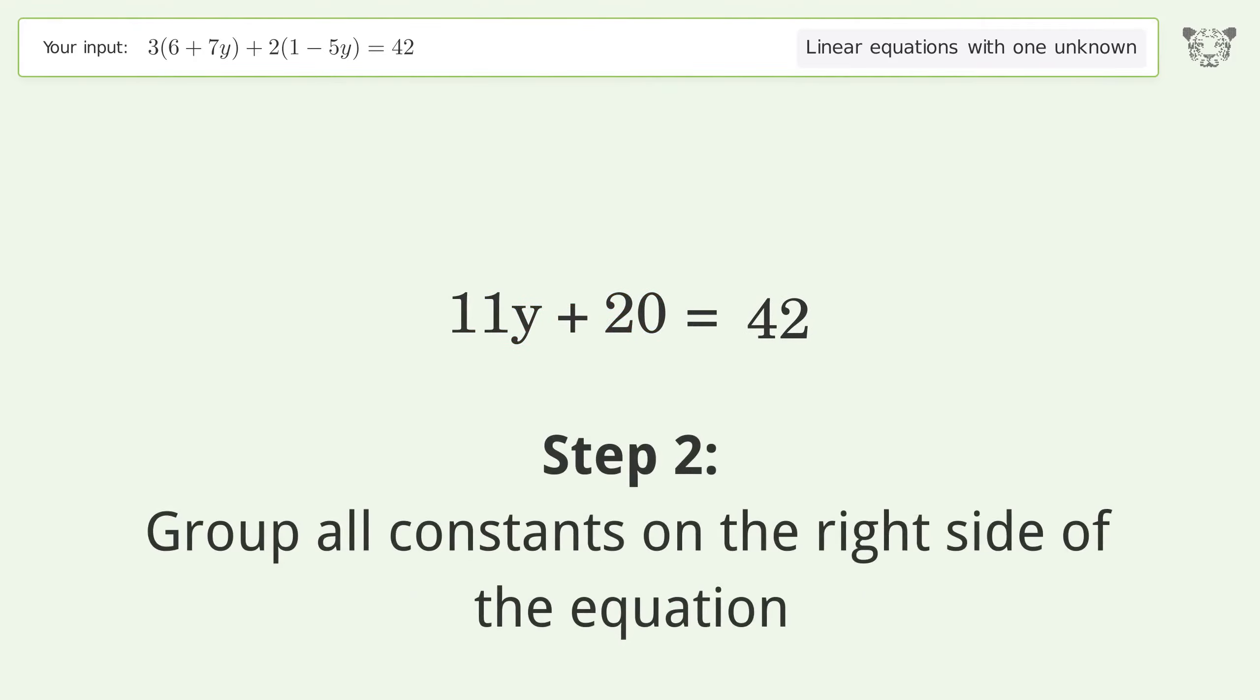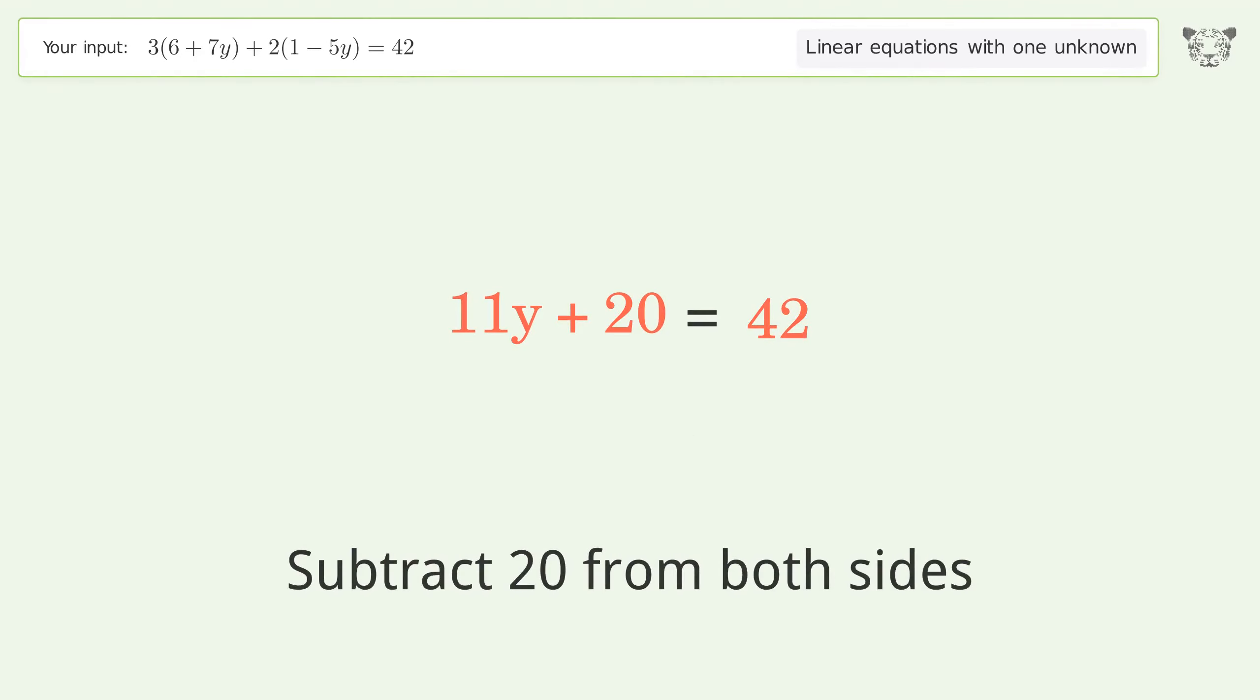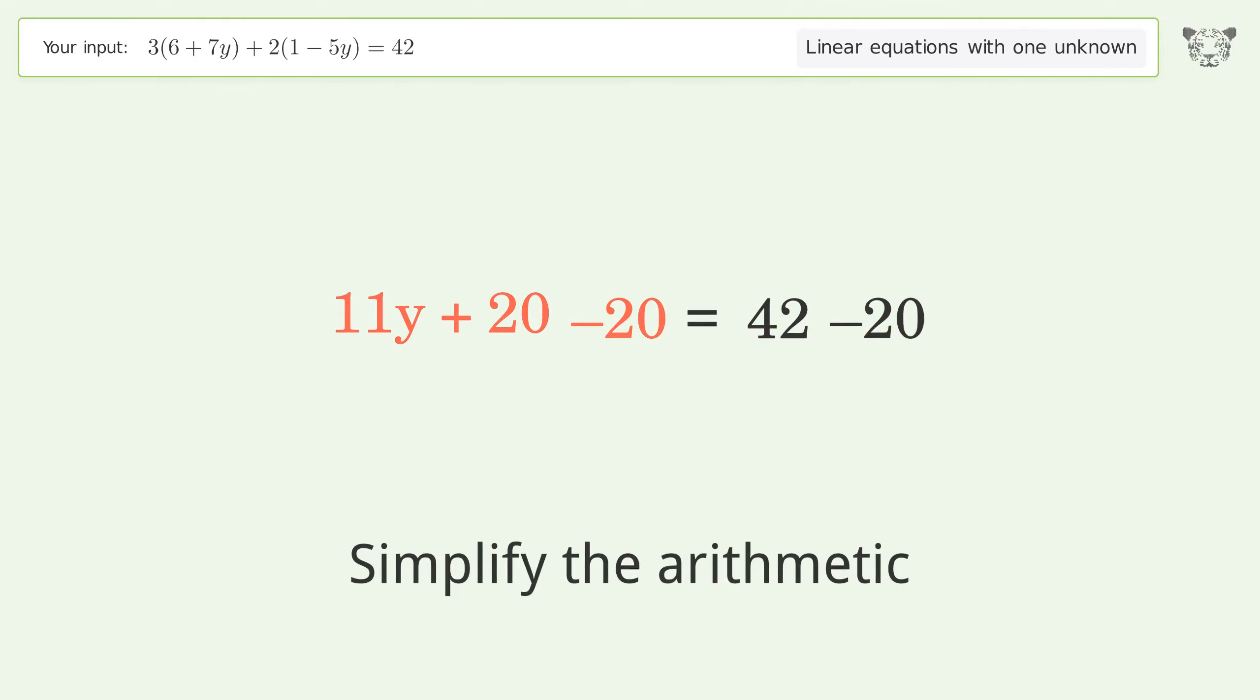Group all constants on the right side of the equation. Subtract 20 from both sides, then simplify the arithmetic.